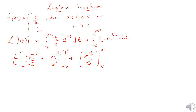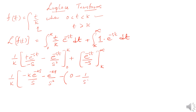Applying the upper limit k, we get: negative k times e to the power negative ks over s, minus e to the power negative ks over s squared. Applying the lower limit 0, the first term vanishes and we get plus 1 over s squared. For the second integral, e to the power negative infinity goes to 0, giving minus e to the power negative ks over negative s.